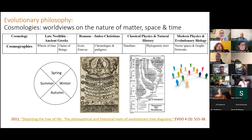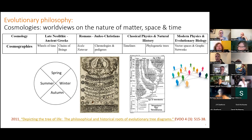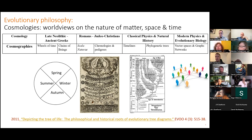In philosophy, the major themes are always: what is time? What is the nature of matter? What is the nature of space? This feeds into the study of cosmologies. I define cosmologies as world views on the nature of matter, space, and time. Over the course of natural history, when you look into human evolution, you see that these cosmologies evolve. You can study that through cultural evolution and through the forms of art they have brought forth.